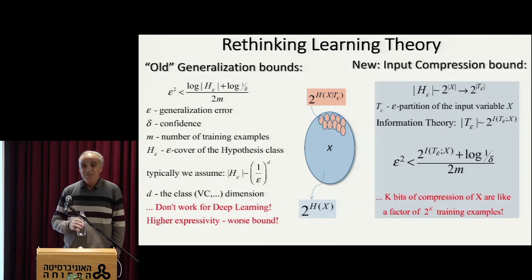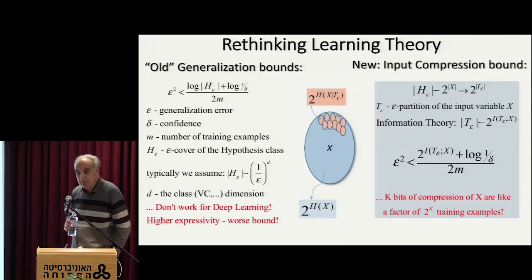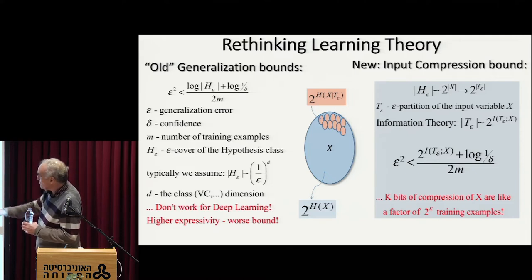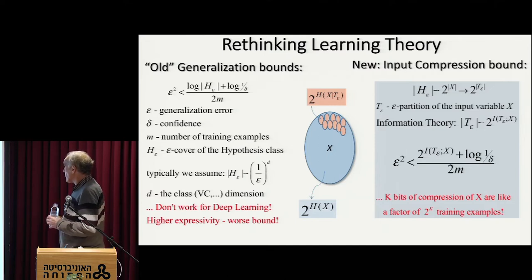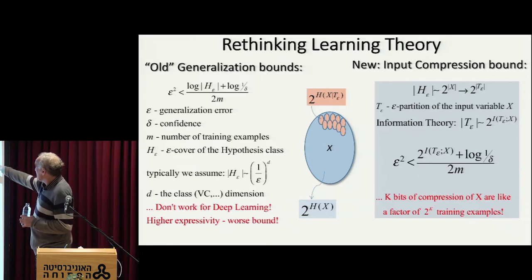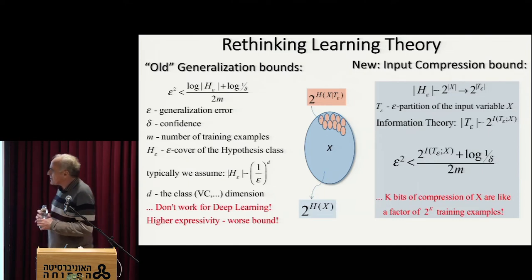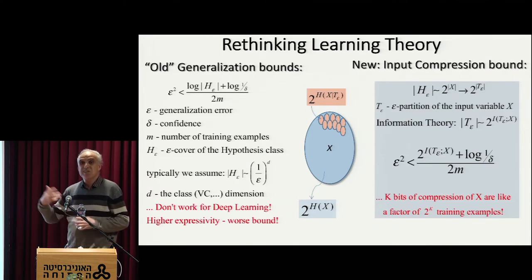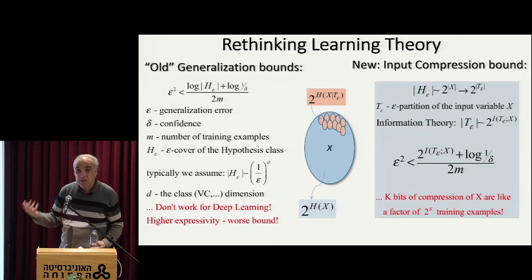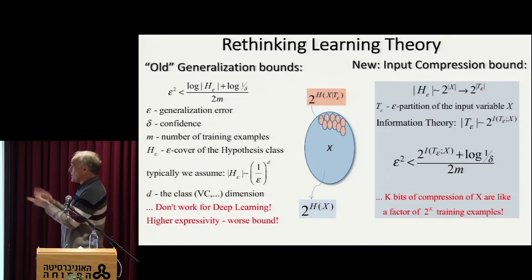Anybody who saw Shannon's theorems should remember this argument — this is precisely the key argument in both channel coding and rate distortion theory. Essentially, I'm looking for the optimal cover of my input such that I get this bound on the cardinality. But here comes a big surprise: if this is an estimate of the typical cardinality of my cover, then just plugging it back — and this is essentially a big no-no in learning theory, because you are not supposed to put something which was generated by the training as your hypothesis class.